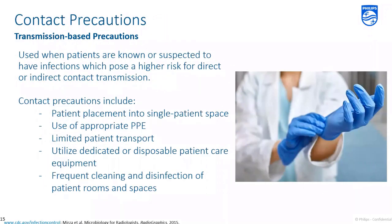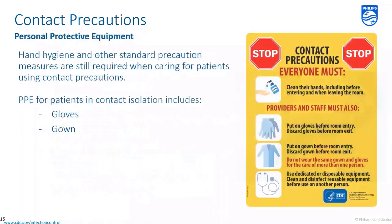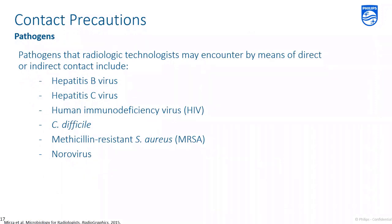Contact precautions are used when patients are known or suspected to have infections which pose a higher risk for direct or indirect contact transmission. Contact precautions include placing the patient into a single patient space such as a private room, using appropriate PPE, limiting patient transport throughout the healthcare facility, utilizing dedicated or disposable patient care equipment, and frequent cleaning and disinfection of patient rooms and spaces. Hand hygiene and other standard precautions are still required. Gloves and gowns are required PPE. Common pathogens requiring contact precautions include hepatitis B and C, HIV, C. difficile, methicillin-resistant staph aureus, and norovirus.